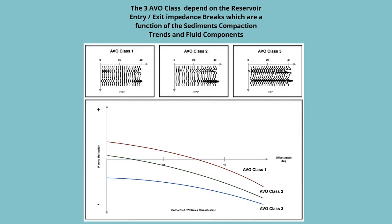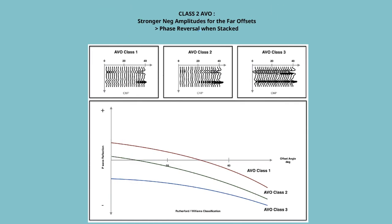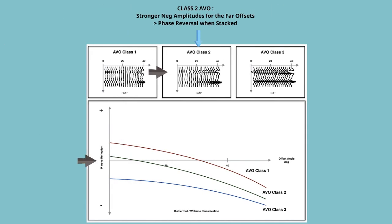The top thumbnails show the offset gather reflections obtained for each class, and below, the display shows how the reflection coefficients behave along increasing offset angles. In the case of a gas-bearing reservoir, Class 1 AVO starts with strong positive amplitudes for the near offsets and finishes with strong negative amplitudes in the far offsets; as a result, the stack traces a blank reflection or dim spot. Class 2 AVO starts with weak positive amplitudes for the near offsets, evolves rapidly to negative amplitudes, and the stacked trace results as a strong negative amplitude, therefore a phase reversal on the stacked image.